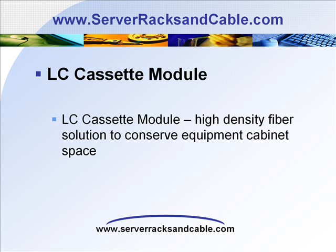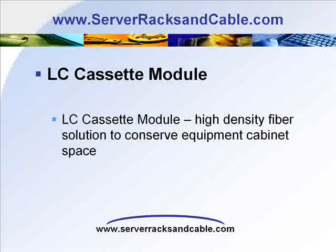The LC cassette module is a compact, high-density fiber optics solution to conserve equipment cabinet space and allow data to travel longer distances. It is a distribution module that has one or two 12-fiber MTP connectors on one side connected to 12 or 24 fiber connectors, such as LC, on the other side. It is protected in a metal case that gives good fiber protection, and the cassette can be easily swapped during a maintenance cycle. The LC connector is half the size of the SC connector, which helps to reduce the space required.